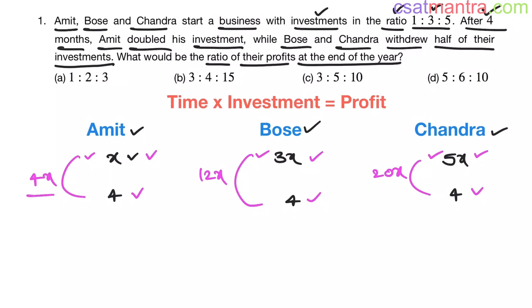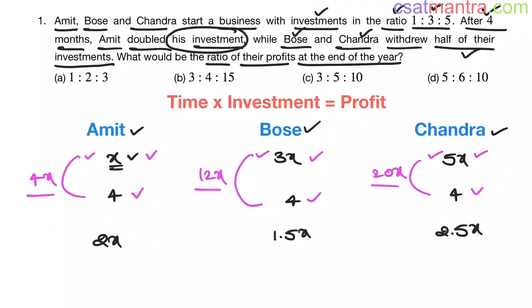After 4 months, Amit doubled his investment — earlier it was x, now it becomes 2x. Bose and Chandra withdrew half of their investments. Half of 3x is 1.5x, so 1.5x is withdrawn and 1.5x remains for Bose. For Chandra, half of 5x is 2.5x withdrawn, so 2.5x remains.